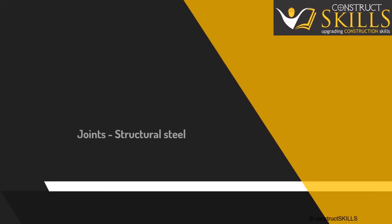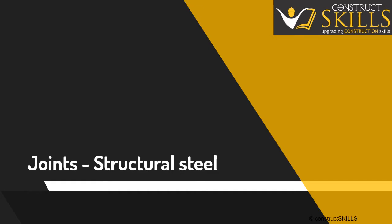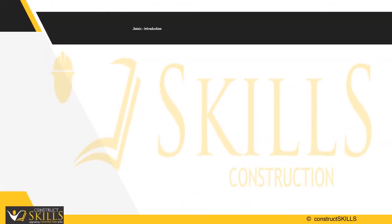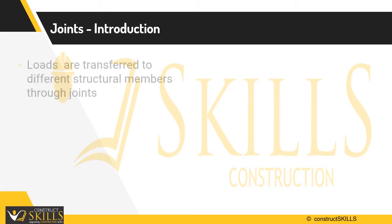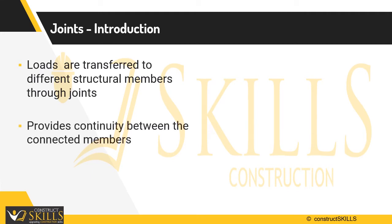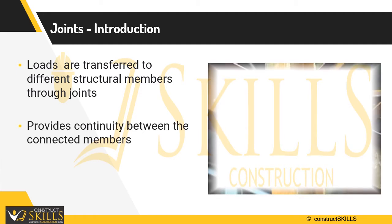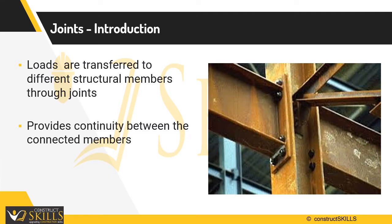In this lecture, we are going to understand about the joints in structural steel. Steel structures are connected to one another, usually at the ends, so that they become a single composite unit. Detailing of joints in steel structures is as important as detailing of main structural members. Loads from structures are transferred to different structural members through joints, and joints provide continuity between connected members. A good detailing of joints is required to make the structure safe for given loads. Historically, most major structural failures have been due to some form of connection failure.